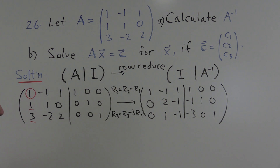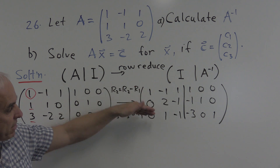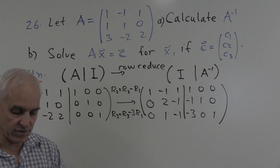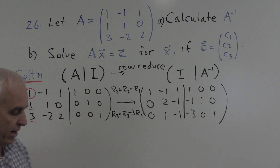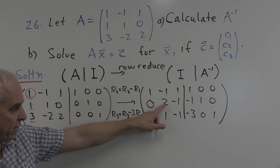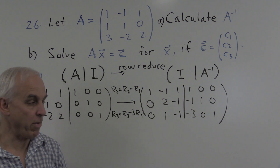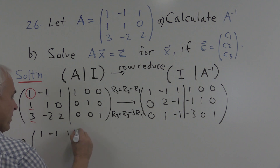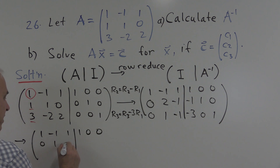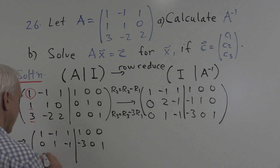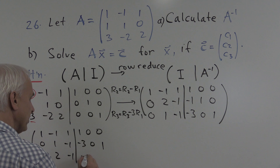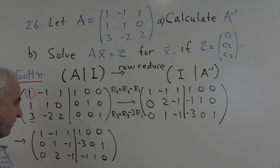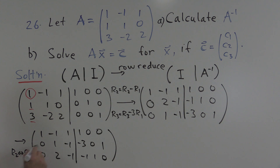Now we are going to perform the same kind of business on the next rows. We might make things simpler by getting a 1 in the position where we want it. We could do that by dividing the second row by 2, but that would involve fractions. So let me quickly interchange the two last rows. We get 0, 1, minus 1, minus 3, 0, 1 and 0, 2, minus 1, minus 1, 1, 0. We've interchanged rows 2 and 3 to get into this position.